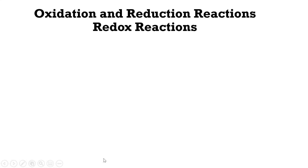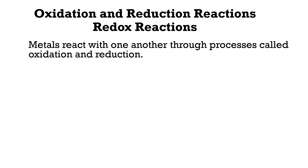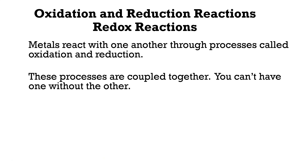Oxidation-reduction reactions are also called redox reactions for short. Basically, you have metals reacting with each other in two separate processes. Half the process is called oxidation, and half the process is called reduction. These processes always have to be coupled together — you cannot have one without the other.